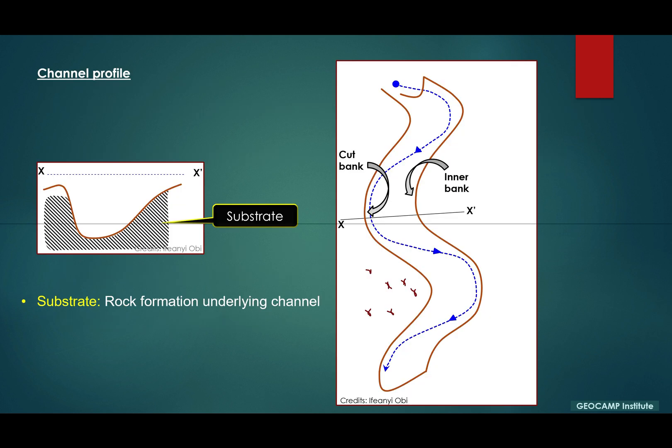Now let's look at some terminologies for meandering systems. A substrate is a rock formation underlying the material or underlying the channel. The talveg is a line of lowest elevation or the thickest channel fill in the channel course.